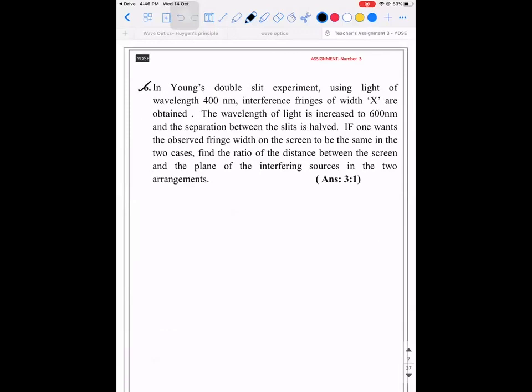In Young's double slit experiment using light of wavelength 400 nm, interference fringes of width x are obtained. The wavelength of light is increased to 600 nm and the separation between the slits is halved. If one wants the observed fringe width on the screen to be the same in the two cases, find the ratio of the distance between the screen and the plane of the interfering sources in the two arrangements.